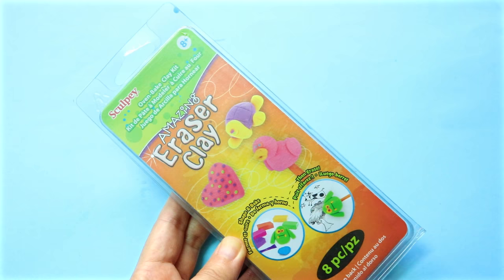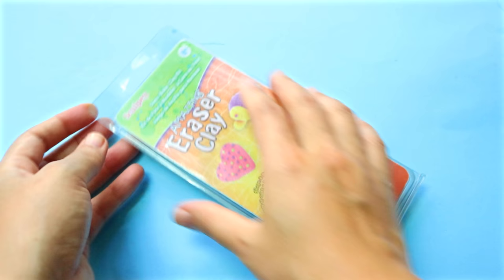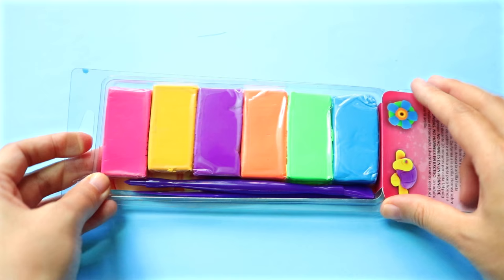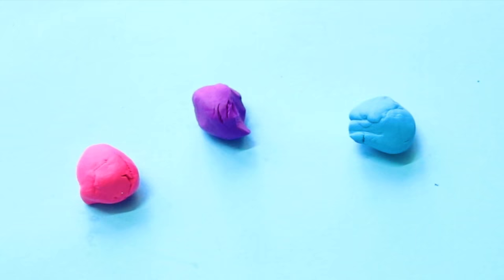Ok, let's move on to the eraser part. I'll be using this eraser kit which I got at Michael's, which I also saw on Amazon, so you can easily order from there. It comes with 6 colors and tools.